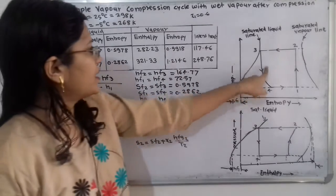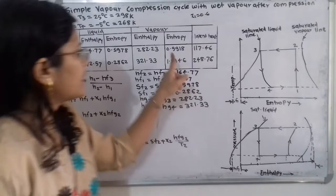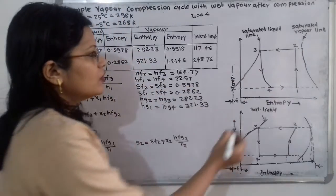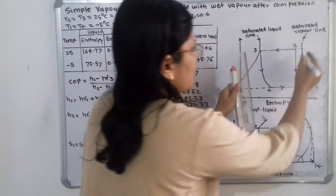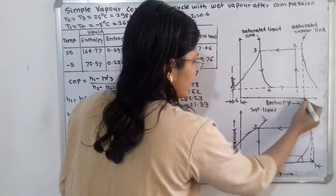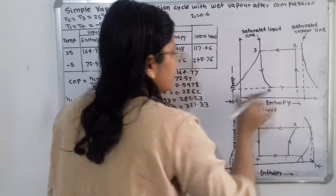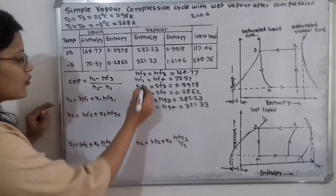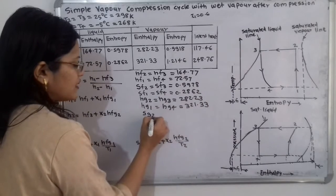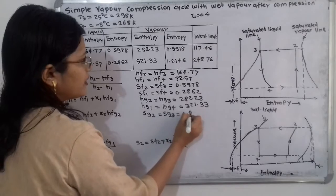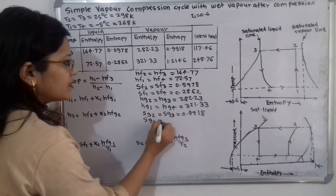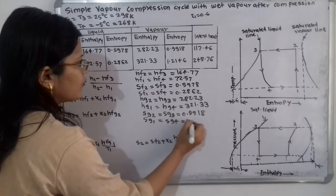In the same way we write the entropy for the saturated vapor line. For 25 degree Celsius, extending points 2 and 3 to the saturated vapor line gives SG2 is equal to SG3 is equal to 0.9918. For the entropy we use suffix S and for saturated vapor suffix G. For minus 5 degree Celsius, SG1 is equal to SG4 is equal to 1.2146.